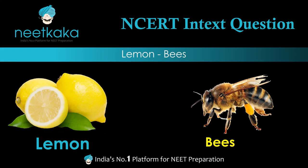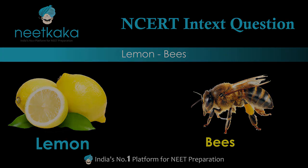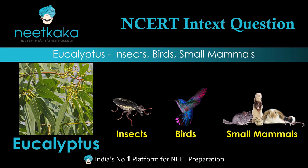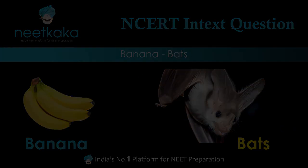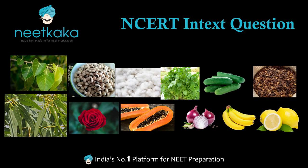In lemon, bees are the pollinating agents. Eucalyptus is mainly pollinated by insects, but birds and small mammals may also act as pollinators. The pollinator of banana is mainly bats. Remember all these examples and their pollinating agents. Thank you guys.